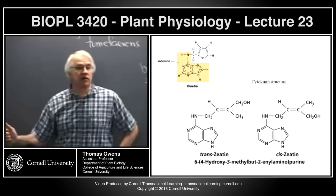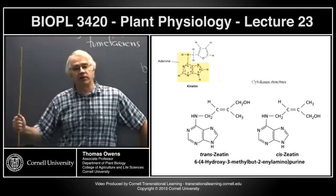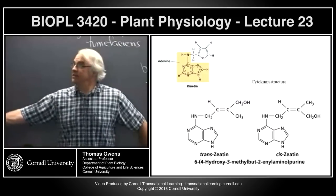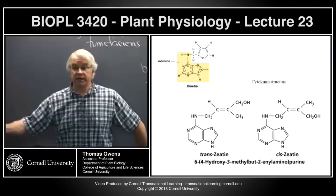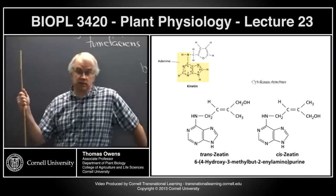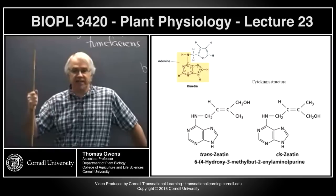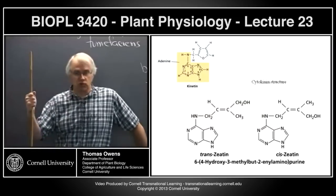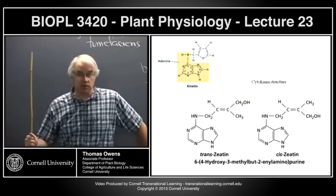Once the T-DNA is inserted, you can take the bacteria away and the crown gall continues to grow. So whatever changes in the plant that cause this uncontrolled cell growth is the result of T-DNA insertion and whatever genes are encoded on it.